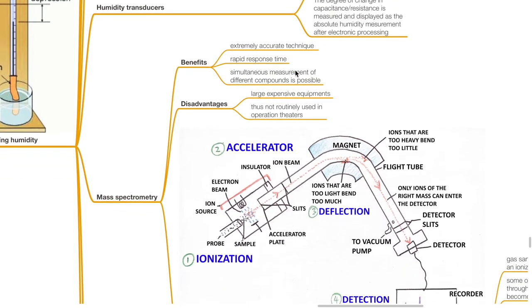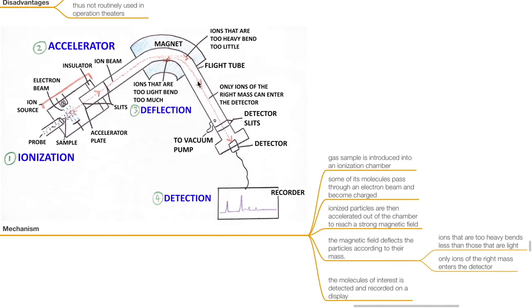Mass spectrometry. Benefits include: it is extremely accurate, has a rapid response time, and simultaneous measurements of different compounds is possible. Disadvantages include: it is large and expensive and thus not routinely used. Mechanism of action: a gas sample is introduced into an ionization chamber; some of its molecules pass through an electron beam to become charged; ion particles are then accelerated out of the chamber into a strong magnetic field; the magnetic field deflects the particles according to their mass — ions that are too heavy bend less than those that are light; only ions of the right mass enter the detector, and the molecule of interest is detected and recorded on a display.